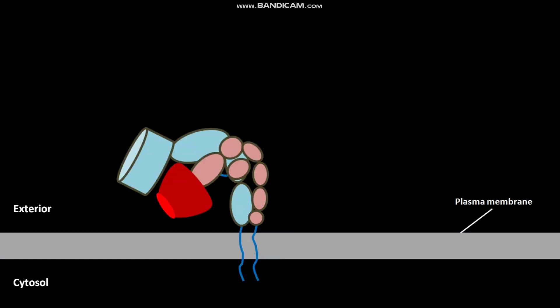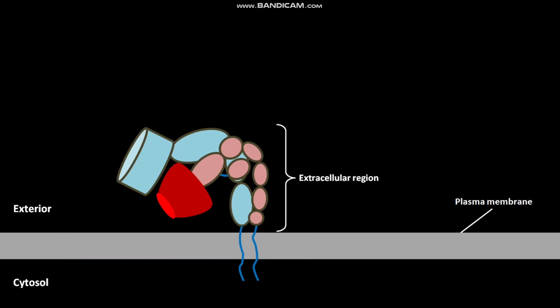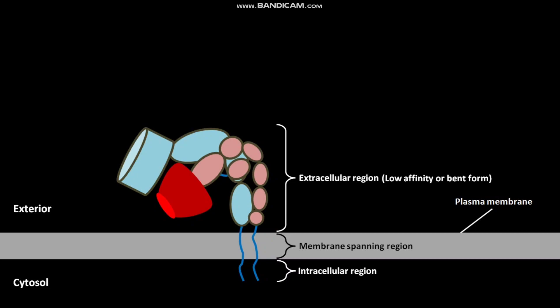This is the αβ3 integrin in its inactive form. The αβ3 integrin has an extracellular region, a membrane-spanning region, and an intracellular region. The extracellular region of αβ3 integrin is present in its inactive, low affinity, or bent form.